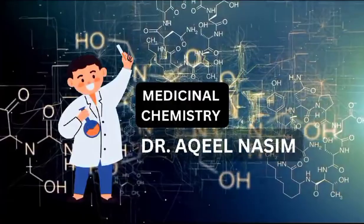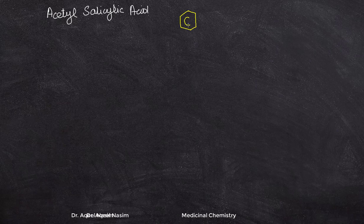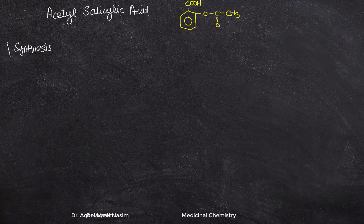Assalamu alaikum and welcome to the medicinal chemistry lecture notes. Today we are going to discuss the synthesis of acetyl salicylic acid, most commonly known as aspirin. The chemical structure of acetyl salicylic acid is shown here — it is a derivative of benzoic acid along with an acetyl group. Let's discuss the synthesis of acetyl salicylic acid.